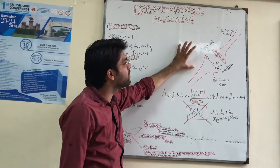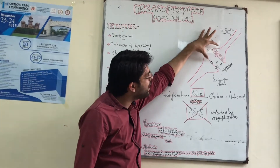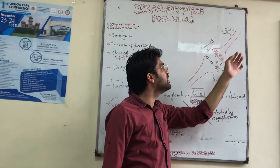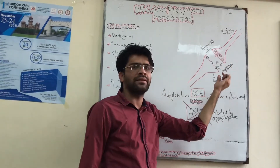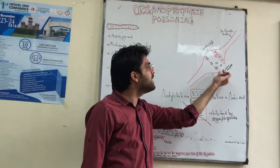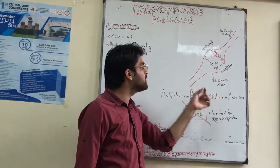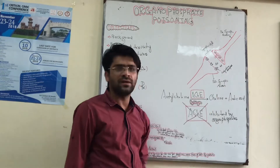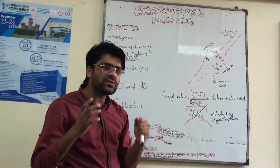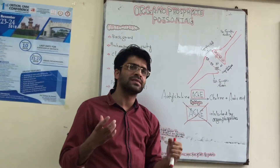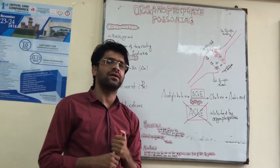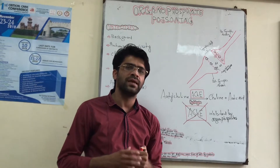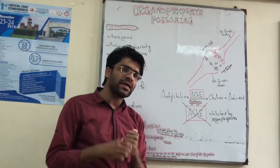This is a pre-synaptic neuron and this is the post-synaptic neuron; the space in between them is known as the synaptic cleft. Once the pre-synaptic neuron is stimulated, it releases Acetylcholine into the synaptic cleft, and that Acetylcholine communicates with the post-synaptic neuron by combining with the Acetylcholine receptor, resulting in stimulation of the effector organ.